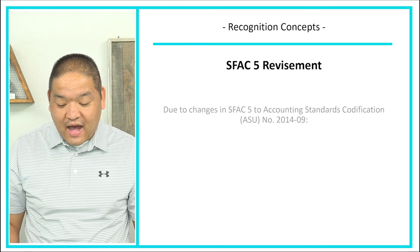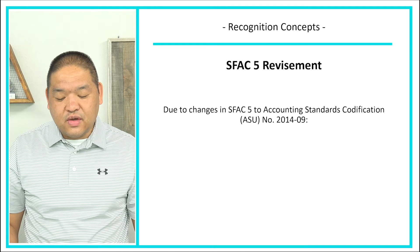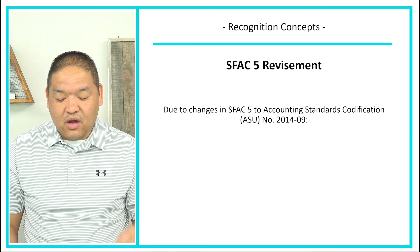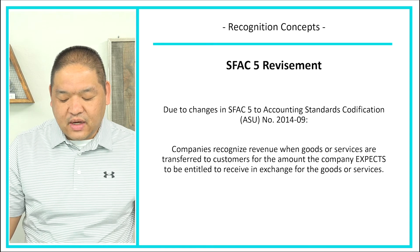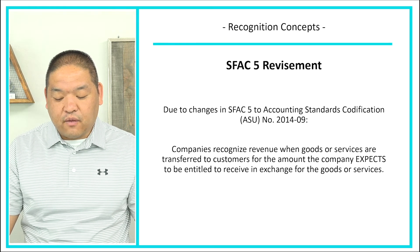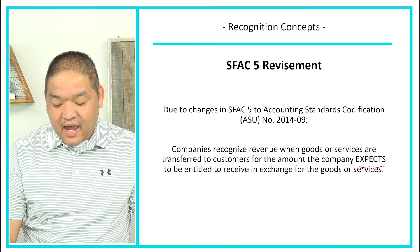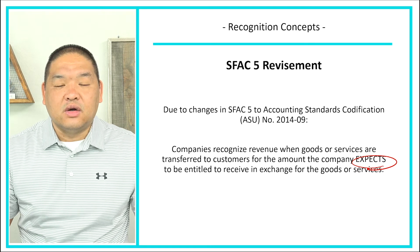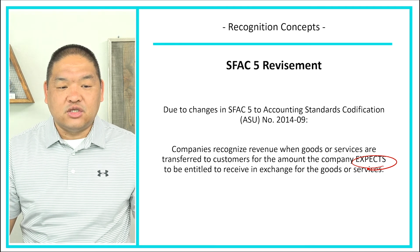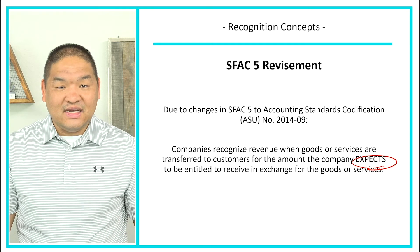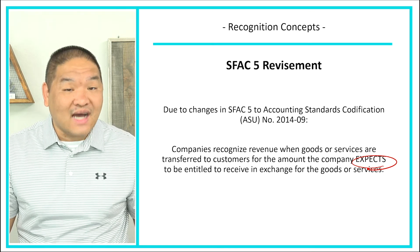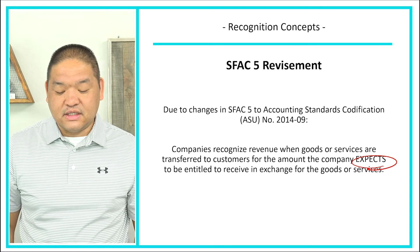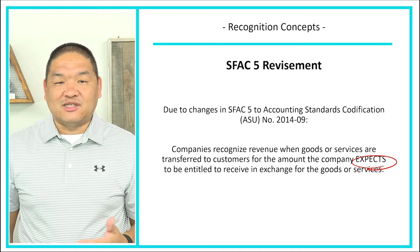Due to changes in SFAC 5 with ASC 606, companies now recognize revenue when goods or services are transferred to the customer for the amount the company expects to be entitled to receive in exchange for those goods or services. We expect to receive this amount and we are entitled to this amount — that is how much we book into the books.